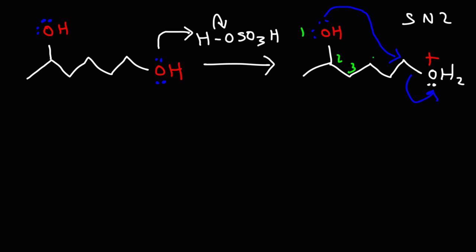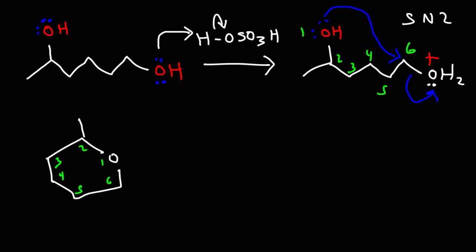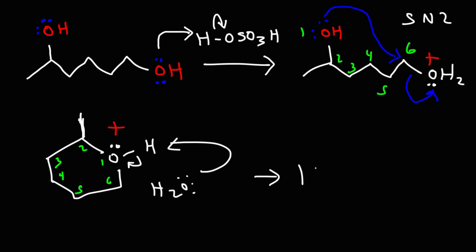Counting carbons 1 through 6, we're still going to get a cyclic ether. Due to the symmetry of the molecule it looks the same — but if there were an additional methyl group somewhere on carbons 3, 4, or 5, the products would be different. The last thing we need to do is remove the hydrogen on the oxygen, and for this particular example we get the same cyclic ether. So that's it for this video — now you know what happens when an alcohol reacts with sulfuric acid.